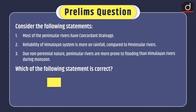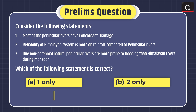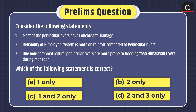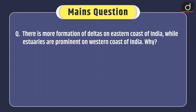Now moving on to practice questions. Prelims question — Consider the following statements: 1. Most of the Peninsular rivers have concordant drainage. 2. Reliability of the Himalayan system is more on rainfall compared to Peninsular rivers. 3. Due to non-perennial nature, Peninsular rivers are more prone to flooding than Himalayan rivers during monsoon. Which of the following is correct: 1 only, 2 only, 1 and 2 only, or 2 and 3 only? Send your answer in the comments. Main question: There is more formation of deltas on the eastern coast of India while estuaries are prominent on the western coast. Why? That's all for today — stay tuned for the next episode.